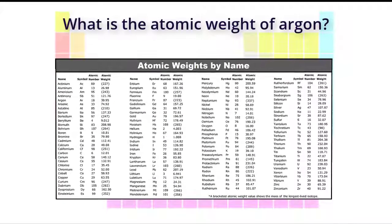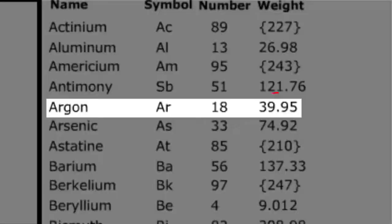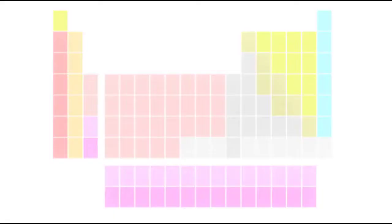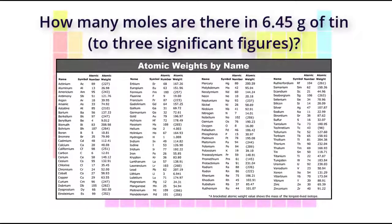Here's another example: what is the atomic weight of argon? Pause the video here and play it once you think you know the answer. The correct answer is an atomic weight of 39.95 grams per mole.